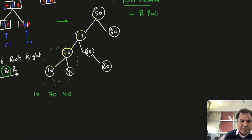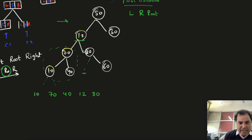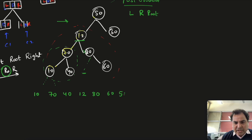After 10, the root is 70, and then it goes to the right — right of 70 is 40. Now the left side of 12 has been completed. So 12 will get displayed. Then the right of 12 is 80. In 80's left there is nothing, so we traverse back and print root as 80, then print 60. Now the overall left subtree of root 50 has been traversed, so 50 will get displayed, and then 30.